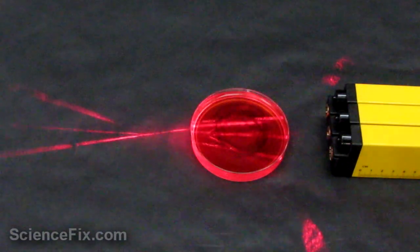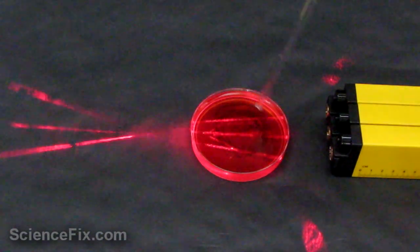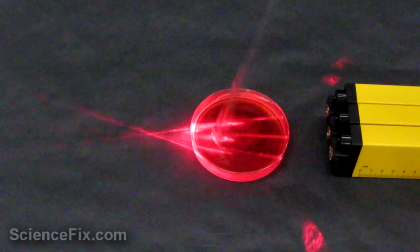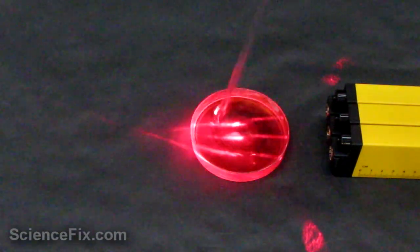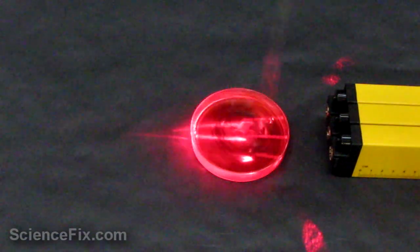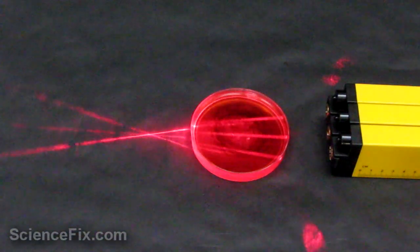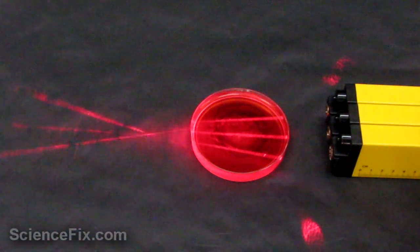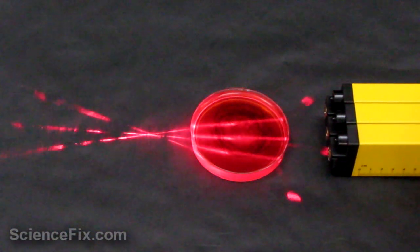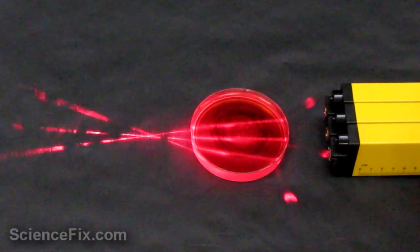Now, as a result of the curved nature of the petri dish, which is shaped sort of like a convex lens, the laser light beams are refracting through the petri dish. The paths of the light are bending inward to a common point.